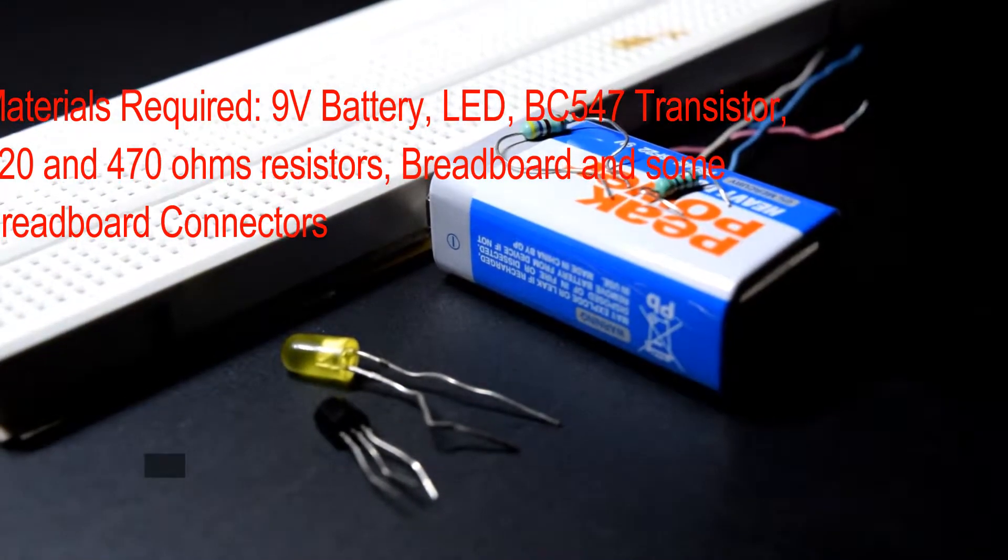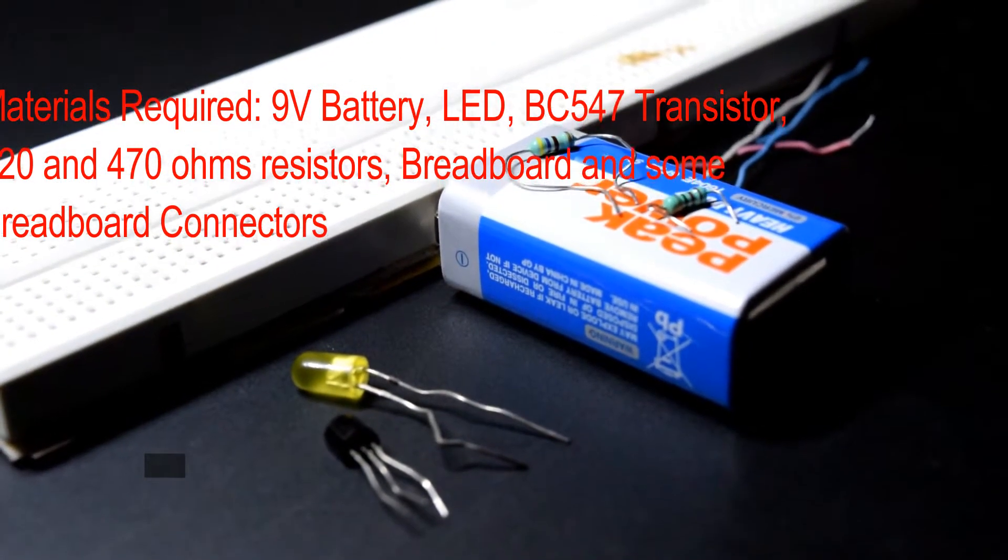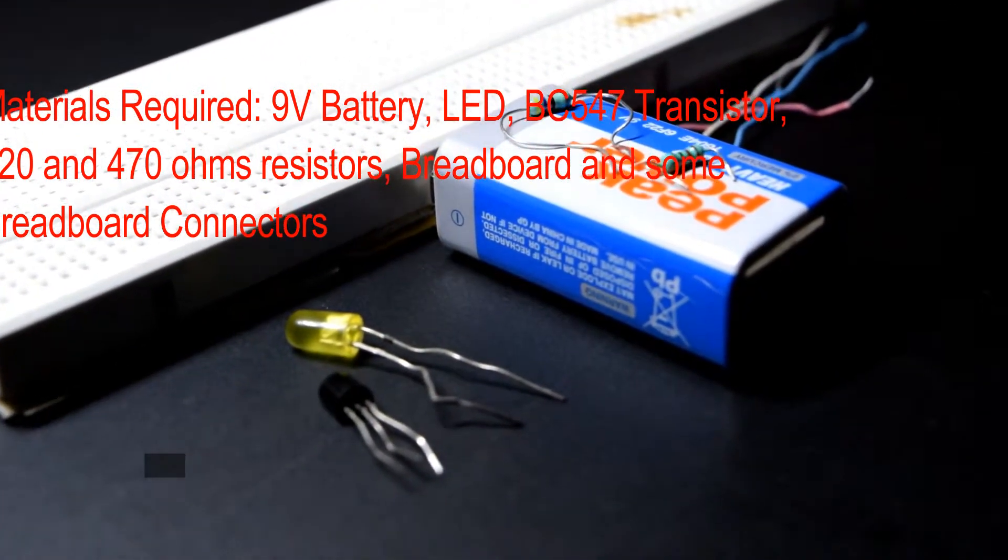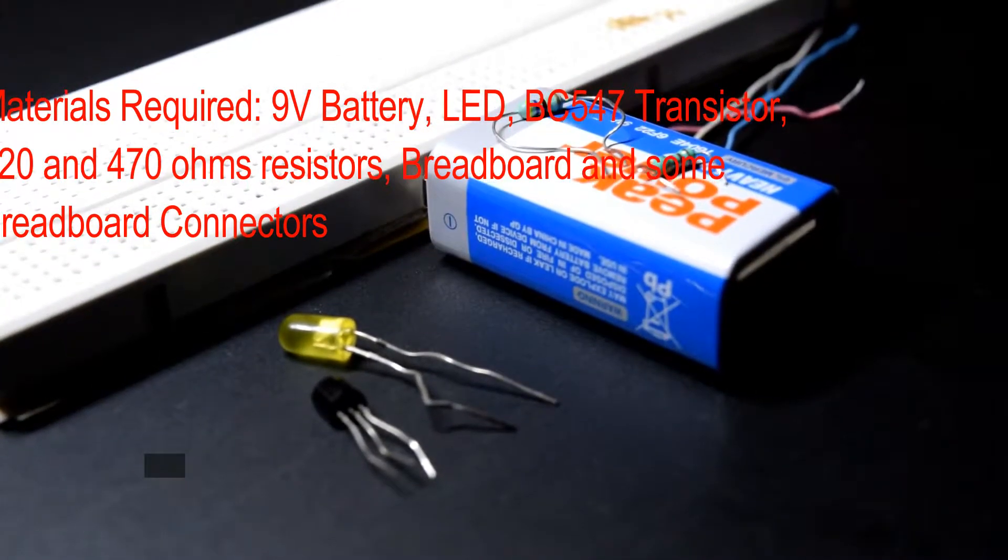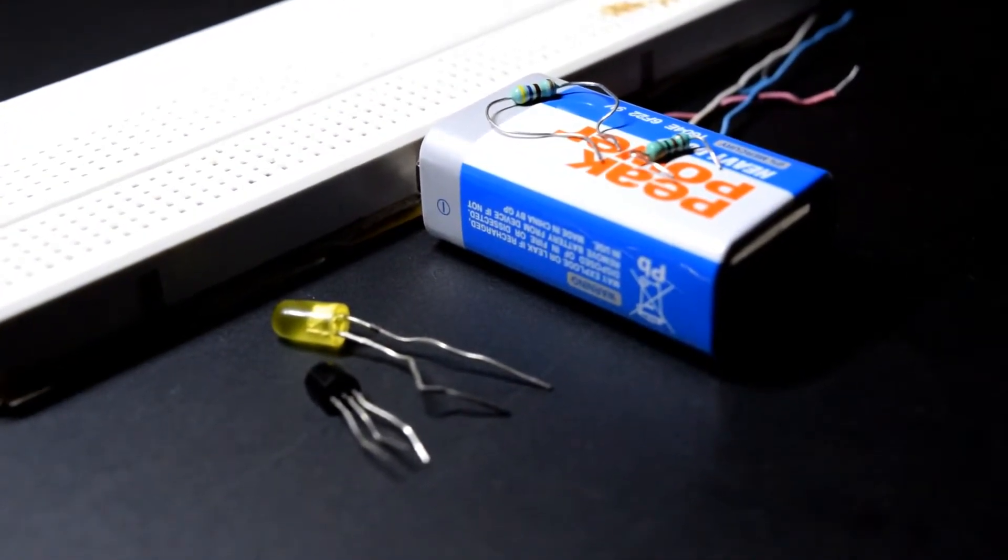Materials required are a BC547 NPN transistor, an LED, a 6 to 9 volt power supply, 220 and 470 ohm resistors, a breadboard, and some breadboard connectors.